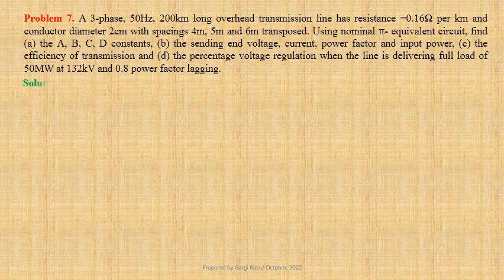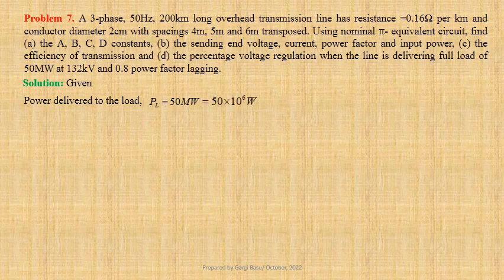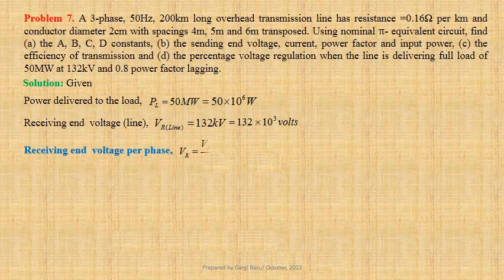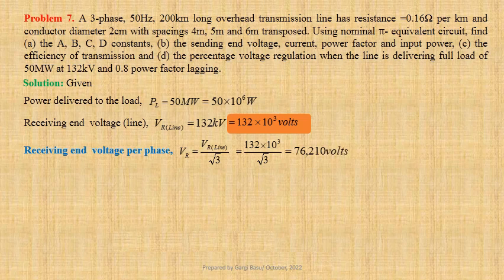Let us first write down the given data. Power delivered to the load PL equals to 50 megawatts, that is equal to 50 × 10⁶ watts. Line-to-line receiving end voltage VR(line) equals to 132 kV, that is equal to 132 × 10³ volts. For a star-connected system, receiving end voltage per phase VR equals to VR(line) divided by √3, that is equal to 132 × 10³ divided by √3, which gives us 76,210 volts.